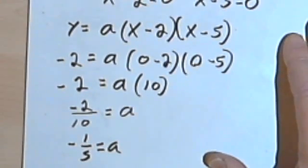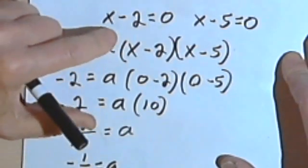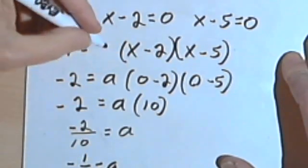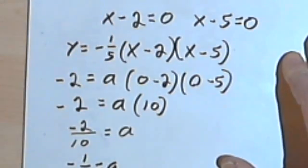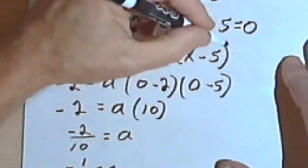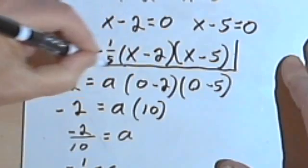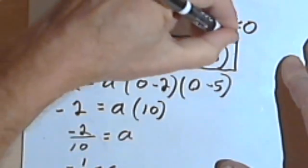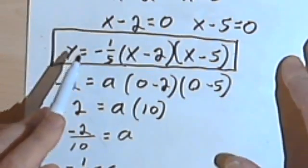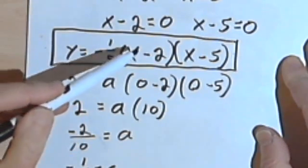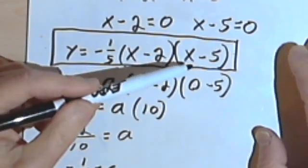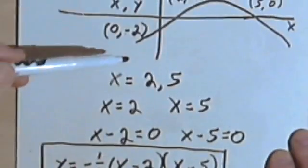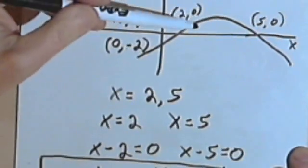And then I can go back where I've got this a, and instead of the a, I'm going to have negative 1 fifth. So this is going to be the specific equation, y equals negative 1 fifth times x minus 2 times x minus 5. It's going to be the specific equation that gives me that specific graph.